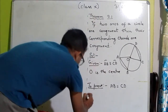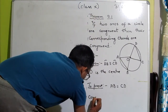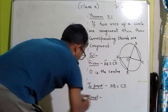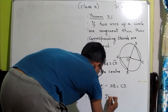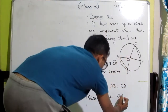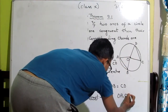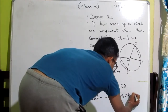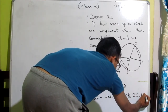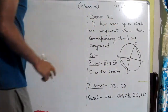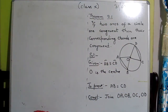Now for the construction, we modify by joining radii. Join OA, OB, OC, and OD. So we have triangles formed with these joins: OA, OB, OC, OD.